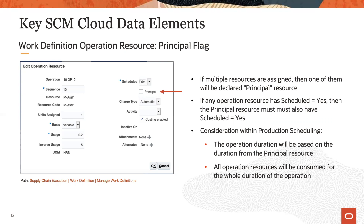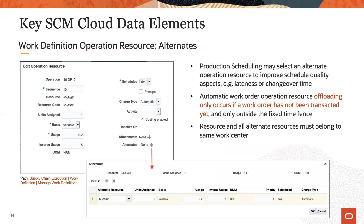In addition, all scheduled members of a simultaneous resource group will be scheduled in production scheduling for the duration that is specified on the principal resource. It is important to define alternate resources where applicable. This is done on work definition operation resource. Production scheduling will make use of those alternate resources when needed and may offload an operation from a given resource to an alternate. Note that offloading will only happen outside the fixed time fence and if the work order has not been transacted yet.